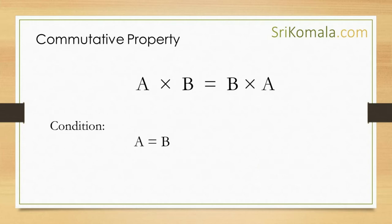First, let us consider that A is equal to B. If A is equal to B, then it is obvious that A times B is equal to B times A. In other words, the commutative property is preserved.